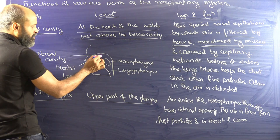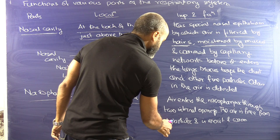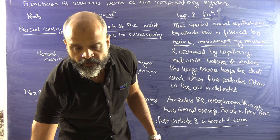Then we have the nasopharynx, which is the upper part of the pharynx. Air enters the nasopharynx through two internal openings. When the air enters the nasopharynx it is already free from dust particles and is moist and warm.